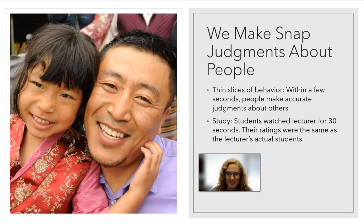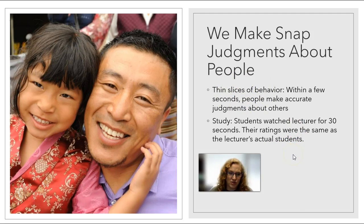An example of the research on this: students watched a lecturer for 30 seconds, and their ratings of the professor's personal attributes and characteristics were very much the same as the ratings by the lecture's actual students, who had the professor for the whole semester. So you saw the person for 30 seconds on video, then you saw the person in real life for the whole semester, and the ratings were the same. That tells us that thin slices of behavior are actually relatively good at giving us information.